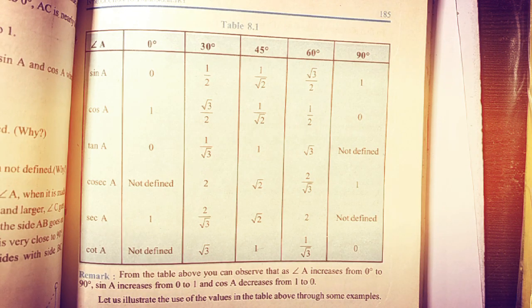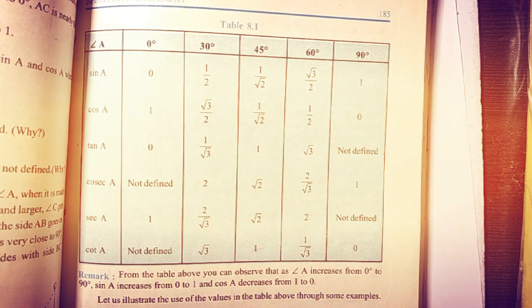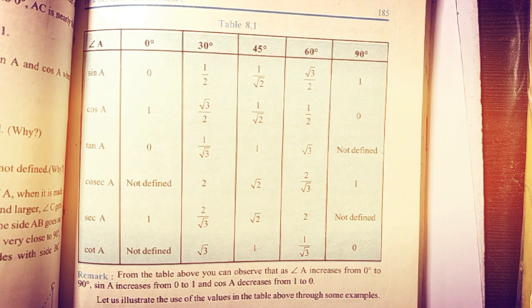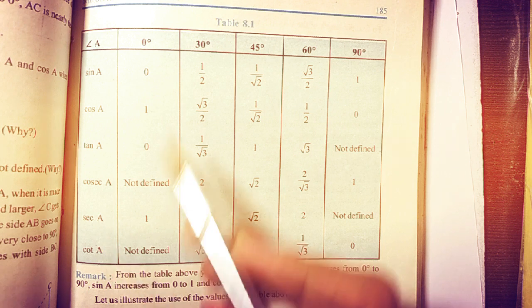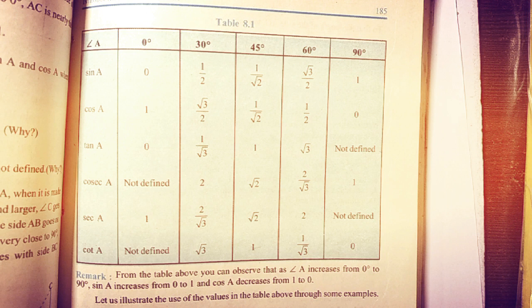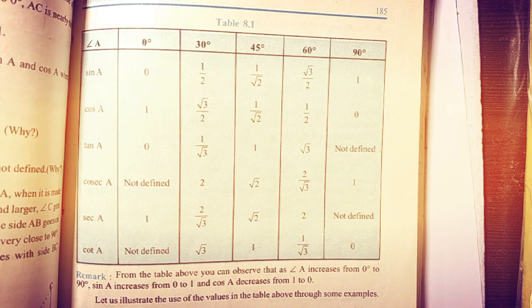Now after knowing the trigonometric ratios, what you have to do is memorize the table given in your class 10 book. It is on page 185. Here you have the ratios and the corresponding angle values. You have to memorize this table by heart, and it is very very important.